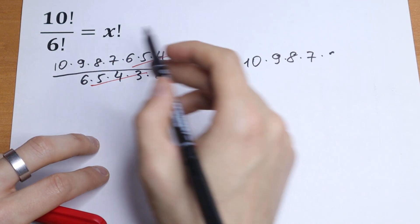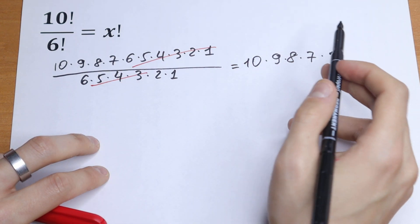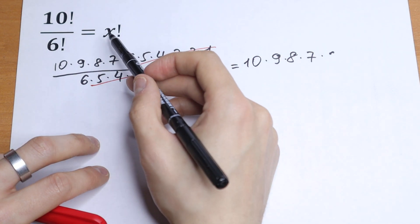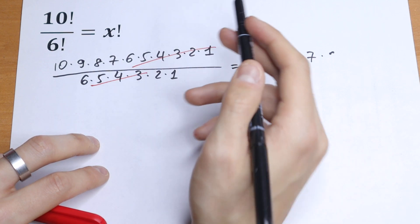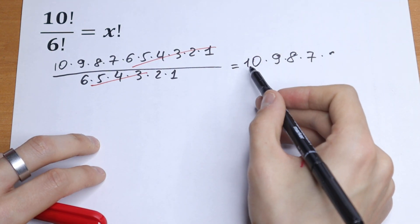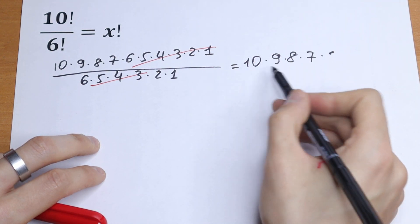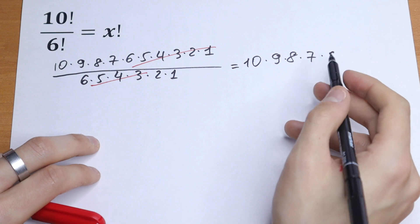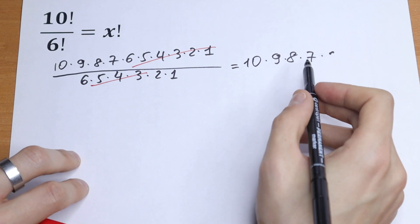But we need to find our x — we need to find x factorial. So we need to know which factorial this product will be.